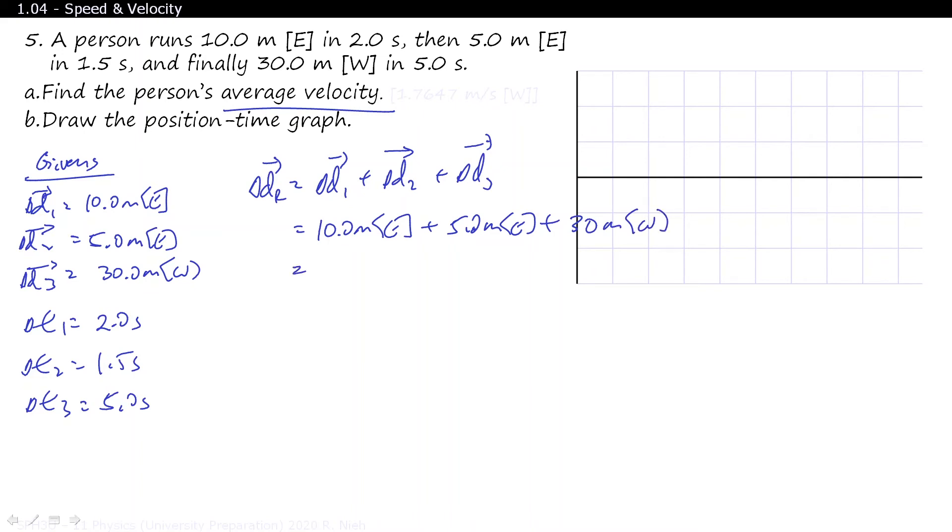Minus 10 minus 5 gives you minus 15, plus 30 gives you 15 meters west.